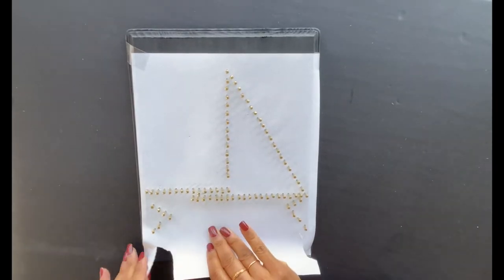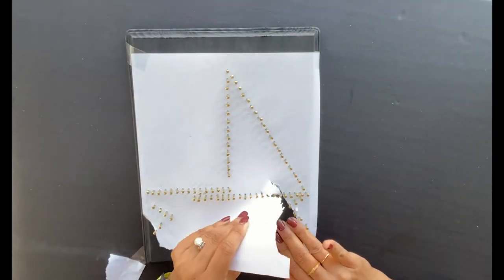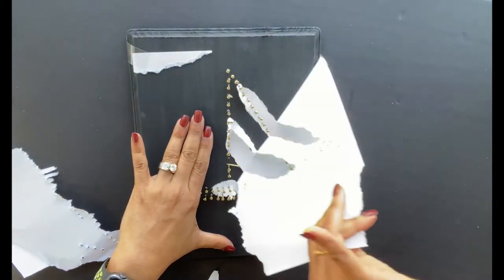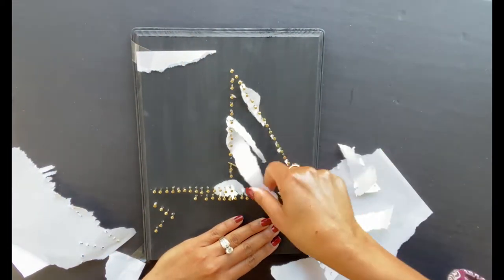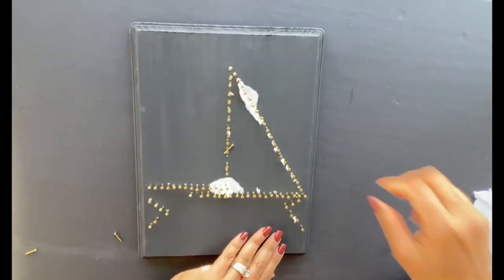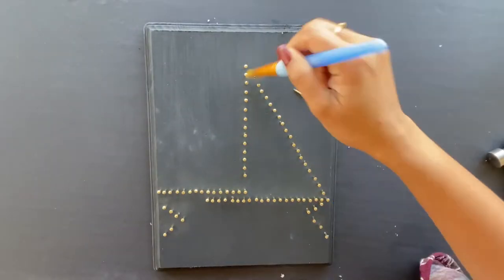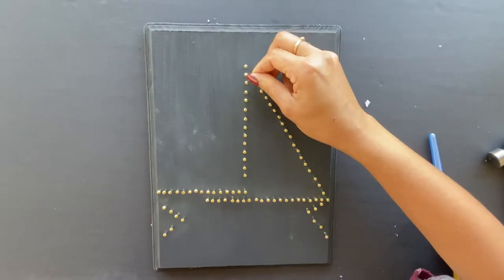Once the nails are all hammered in, remove the paper. You have to be careful when removing the paper. Sometimes the nails also come out with the paper. You can use a paint brush or a dishwashing brush to remove the paper residues. Reattach any loose nails.